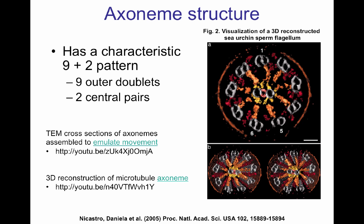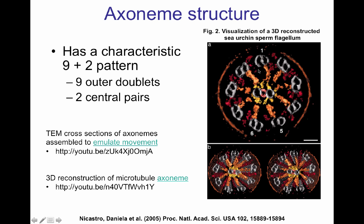The microtubule itself is made of an axoneme structure, and the axoneme structure differs from the basal body in that it has doublets instead of triplets. Here you see the nine-plus-two structure having an A and a B microtubule, and in the internal portion of the axoneme, two central microtubule pairs.